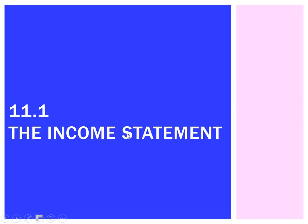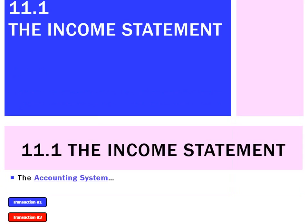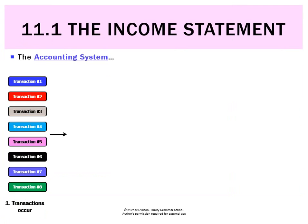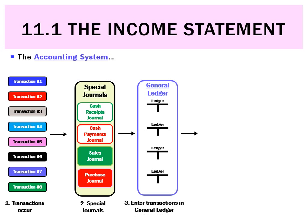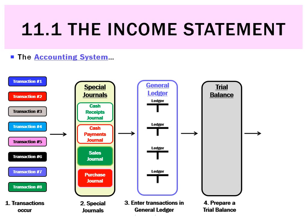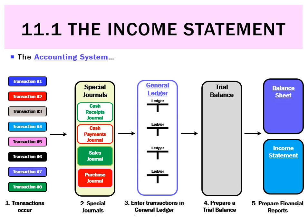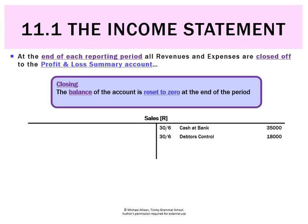We've prepared income statements in the past, but chapter 11 is about looking at them in much more detail. In the accounting process, transactions get recorded in journals, posted to ledgers, we do a trial balance, and then we make our financial reports — that's when we've been doing the income statement.